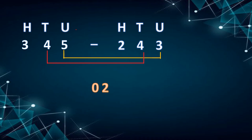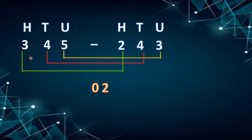Similarly, hundreds place number with hundreds place number — that is 3 minus 2, we get 1. So the answer is 102. 345 minus 243 is equal to 102.